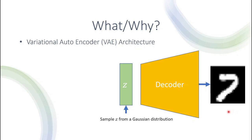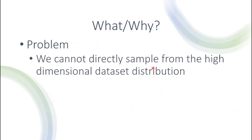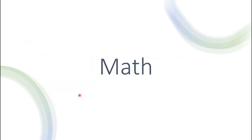When we train our variational autoencoder, the problem is that we need the decoder because we cannot simply generate the images — they are high dimensional. Our solution, as part of the framework and architecture, is to use this lower dimensional space z, which has a structure with some similarities to the original dataset distribution. This is part of the training process that we try to impose on the lower dimensional space structure.